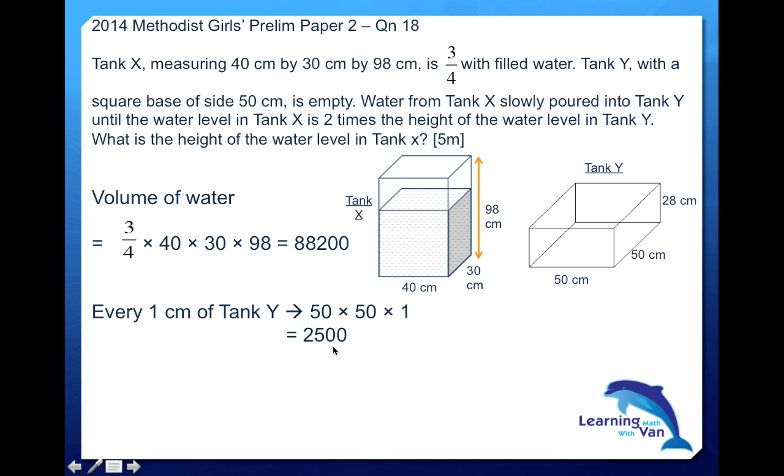But bear in mind that for Tank X it's two times. So when the height of the water in Tank Y has risen by 1 centimeter, there should be a corresponding increase of 2 centimeters in height in Tank X. So for Tank X, what is the volume of water for every 2 centimeter rise in height? We have the formula again: length times breadth times height. This is 40 times 30 times 2, that gives us 2,400.